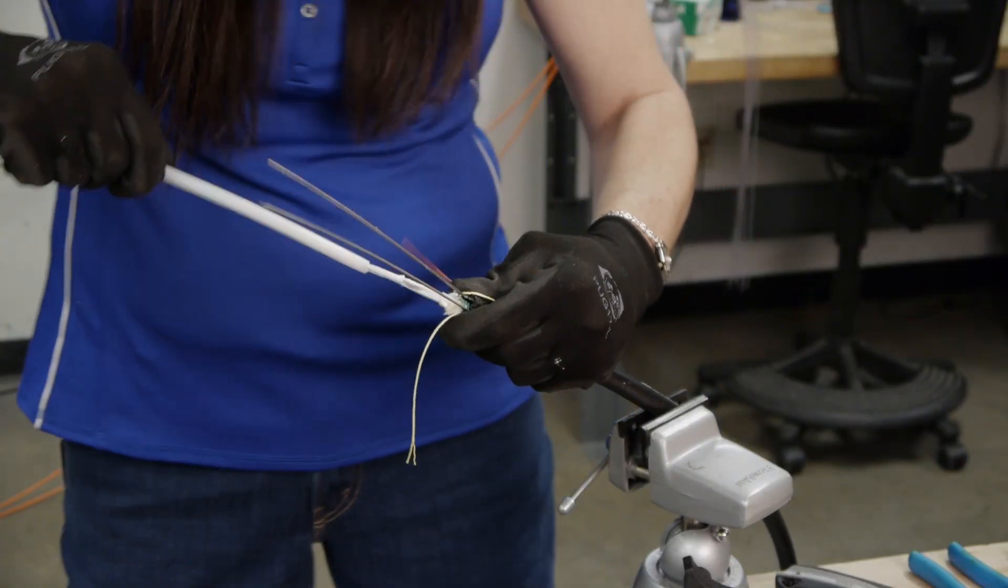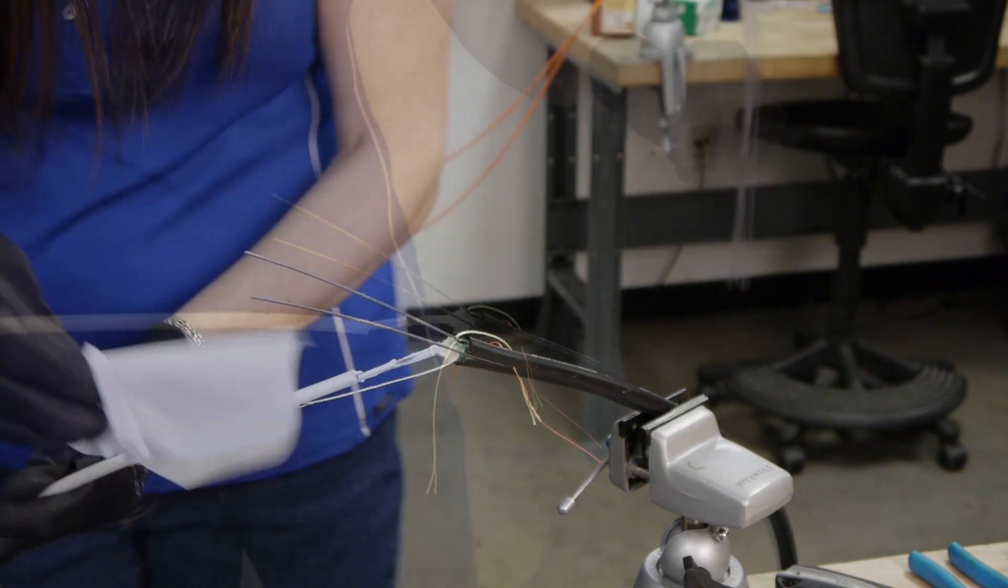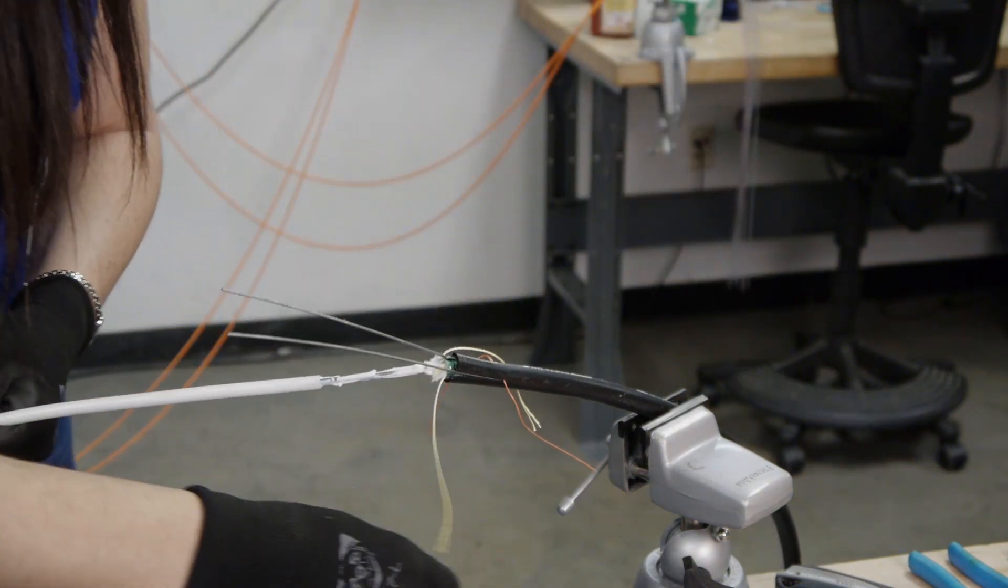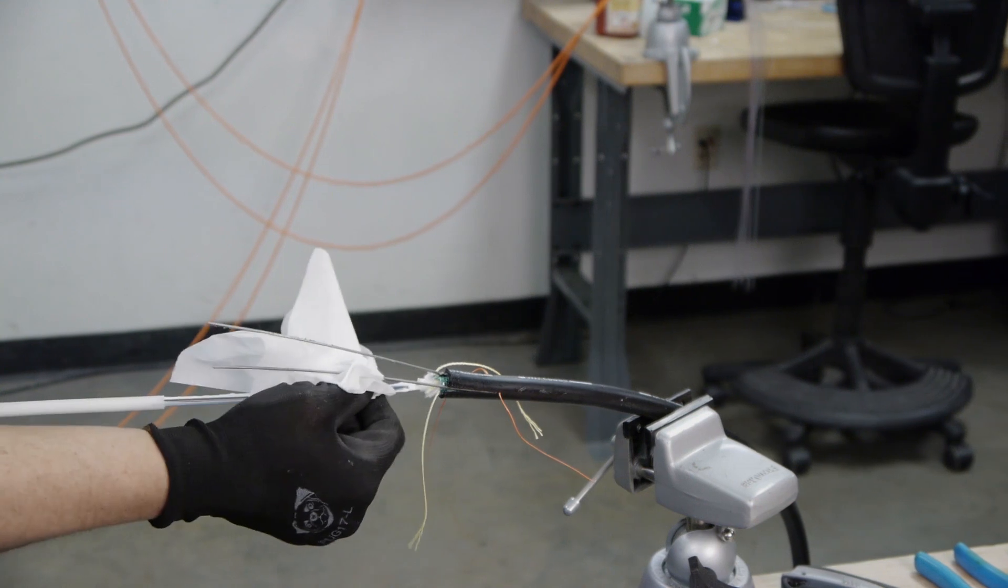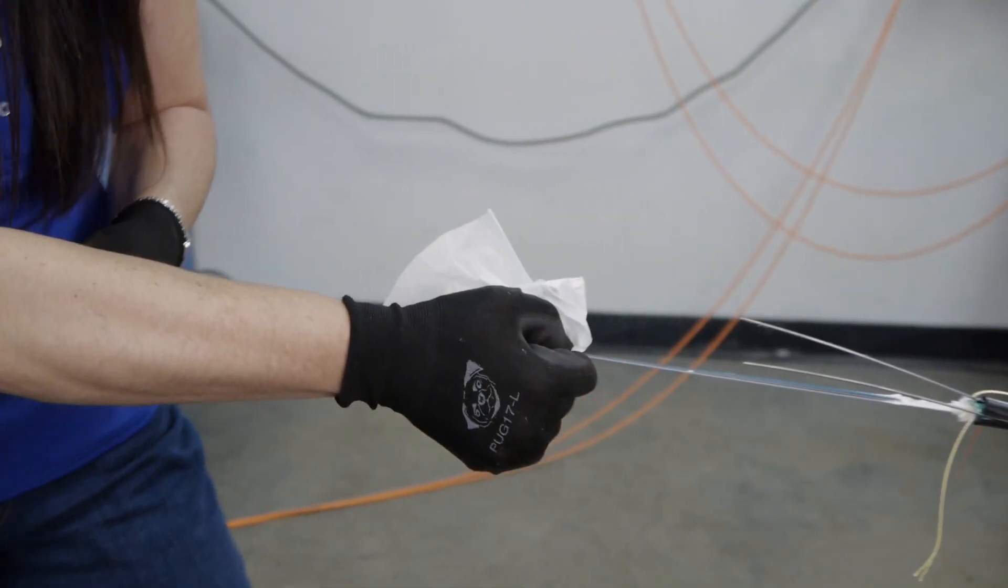If the tube is gel filled, remove the bulk of the gel with a clean dry lint free wipe. Follow up with a wipe soaked in 99% isopropyl alcohol.